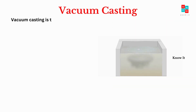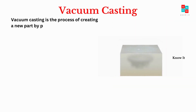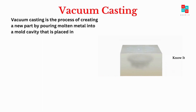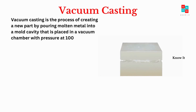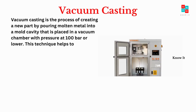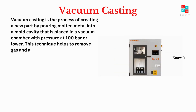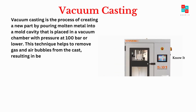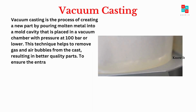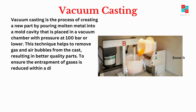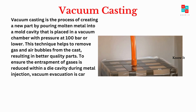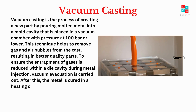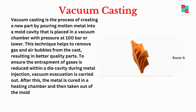Vacuum casting is the process of creating a new part by pouring molten metal into a mold cavity that is placed in a vacuum chamber with pressure at 100 bars or lower. This technique helps to remove gas and air bubbles from the cast, resulting in better quality parts. To ensure the entrapment of gases is reduced within a die cavity during metal injection, vacuum evacuation is carried out. After this, the metal is skewed in a heating chamber and then taken out of the mold.